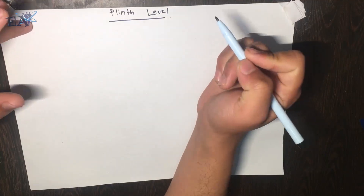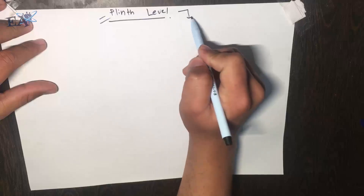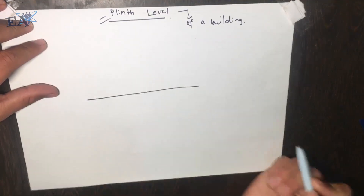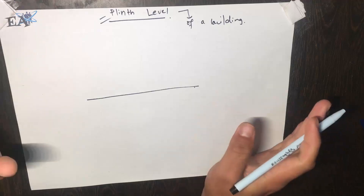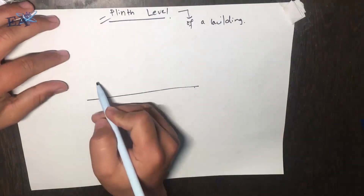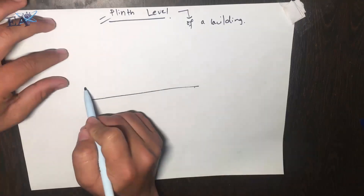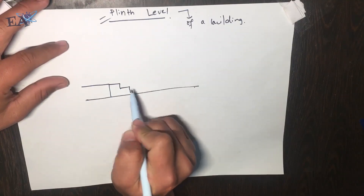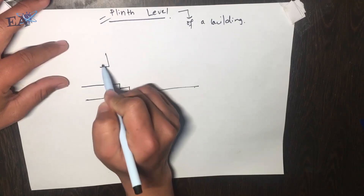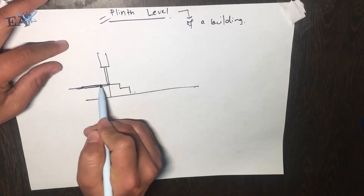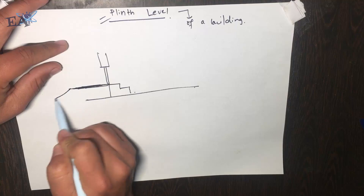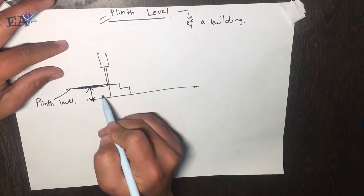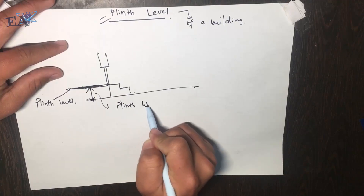Welcome to the Instant Knowledge Series. In this video, I'll talk about the plinth level of a building. Let's assume that this is our ground level. If you've seen any residential building, you must have noticed that the ground floor is raised above the ground level, and you have to take some steps to go up to it. The top level of this floor is called the plinth level.